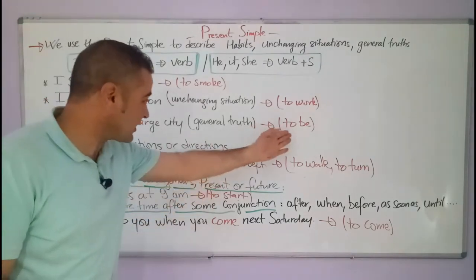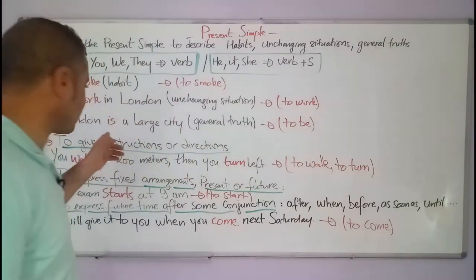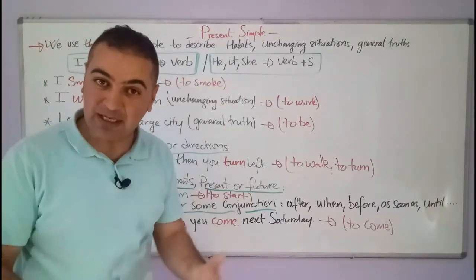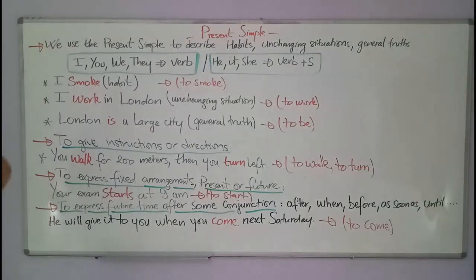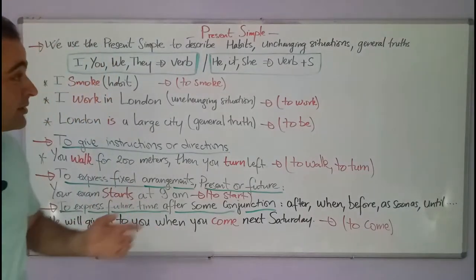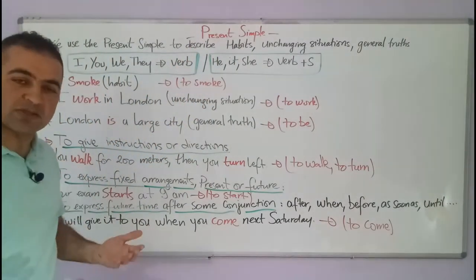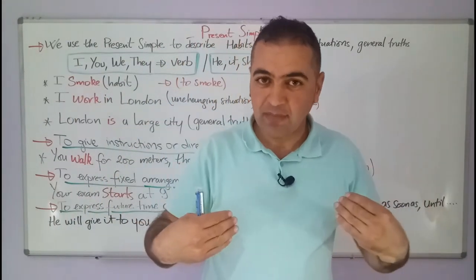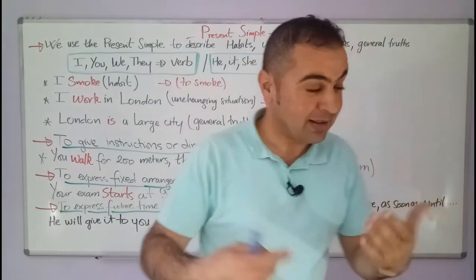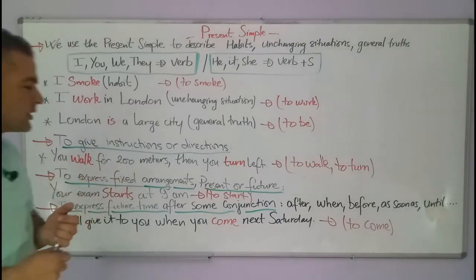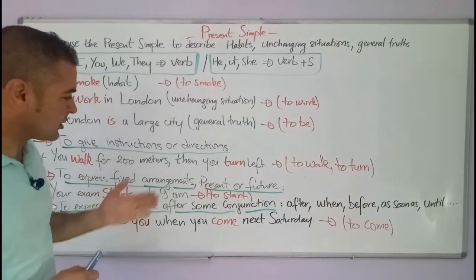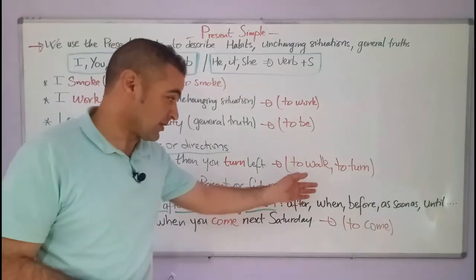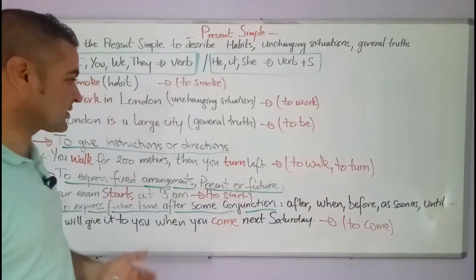London is a large city — this is a general truth. The verb here is to be, which is irregular, so we can't use the regular rule with this verb. It is an auxiliary verb. We also use the present simple to give instructions or directions. If someone asks where the post office is, you can say: you walk for 200 meters, then you turn left.